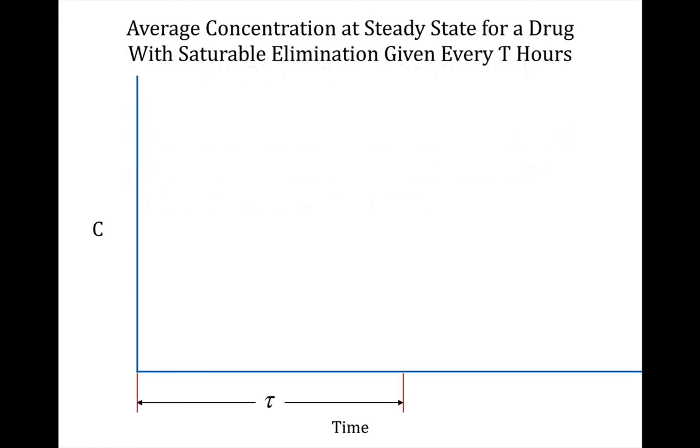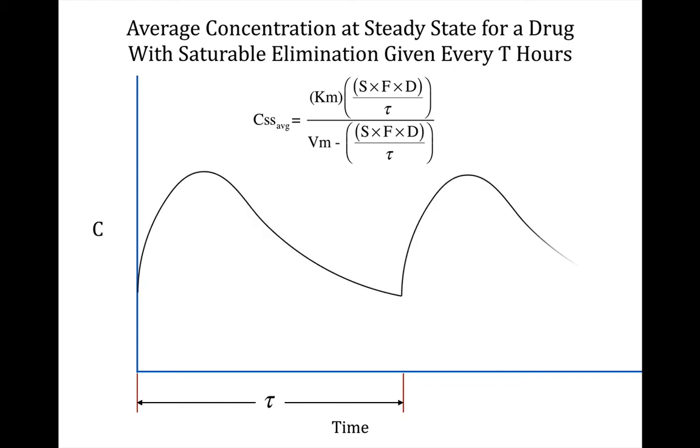Let's show what it would look like pictorially for the average concentration at steady state for a drug with saturable elimination given every tau hours. Here's the equation if we were solving for CSS average based on a dose we were using, and this is what it might look like with the CSS average developing.